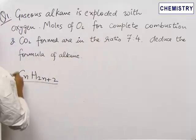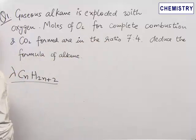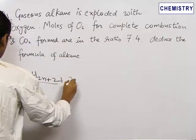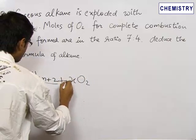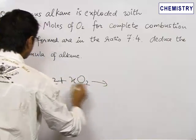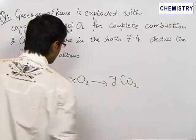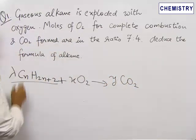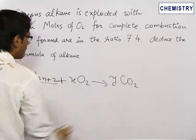So let us write the equation as lambda into CnH2n plus 2 plus x times oxygen gives y times CO2. We do not know n so we do not know the stoichiometric coefficients of the alkane, the oxygen, and CO2.